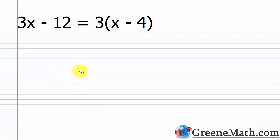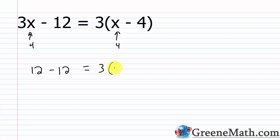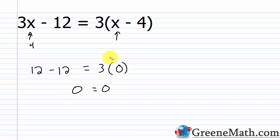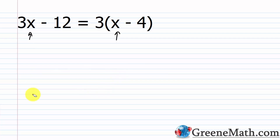Plugging in 4: 3 times 4 is 12, minus 12, equals 3 times the quantity 4 minus 4, which is 0. So 3 times 0 is 0, and 12 minus 12 is 0. So 0 equals 0 — that's a true statement. Let's try one more: negative 3. So 3 times negative 3 minus 12 equals 3 times the quantity negative 3 minus 4.